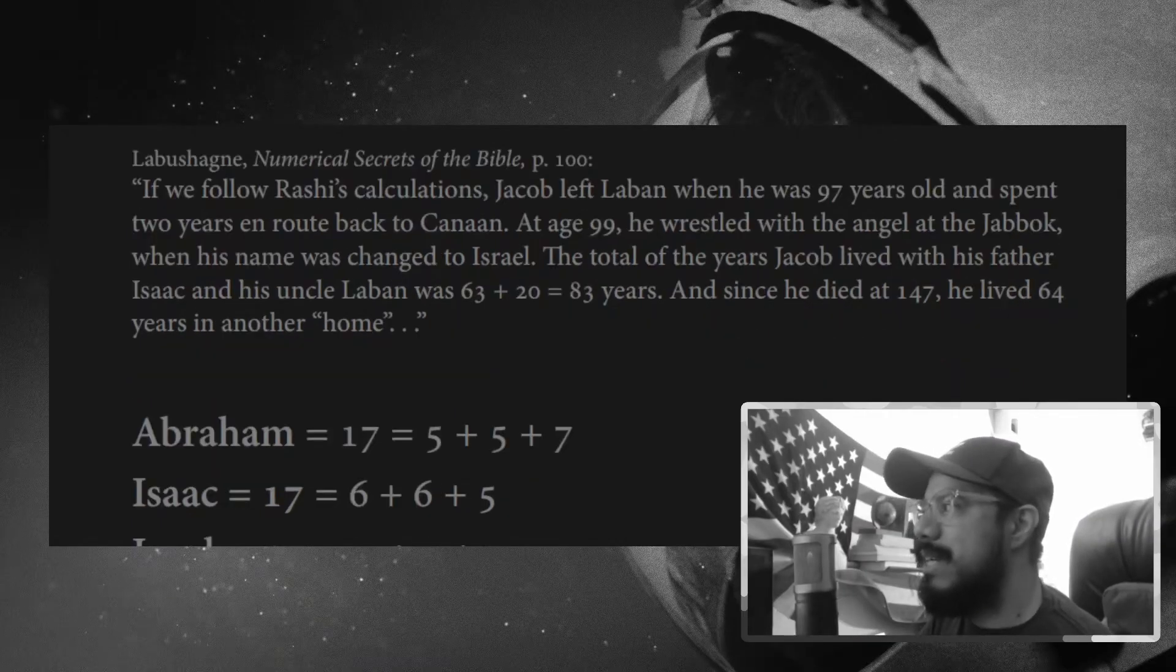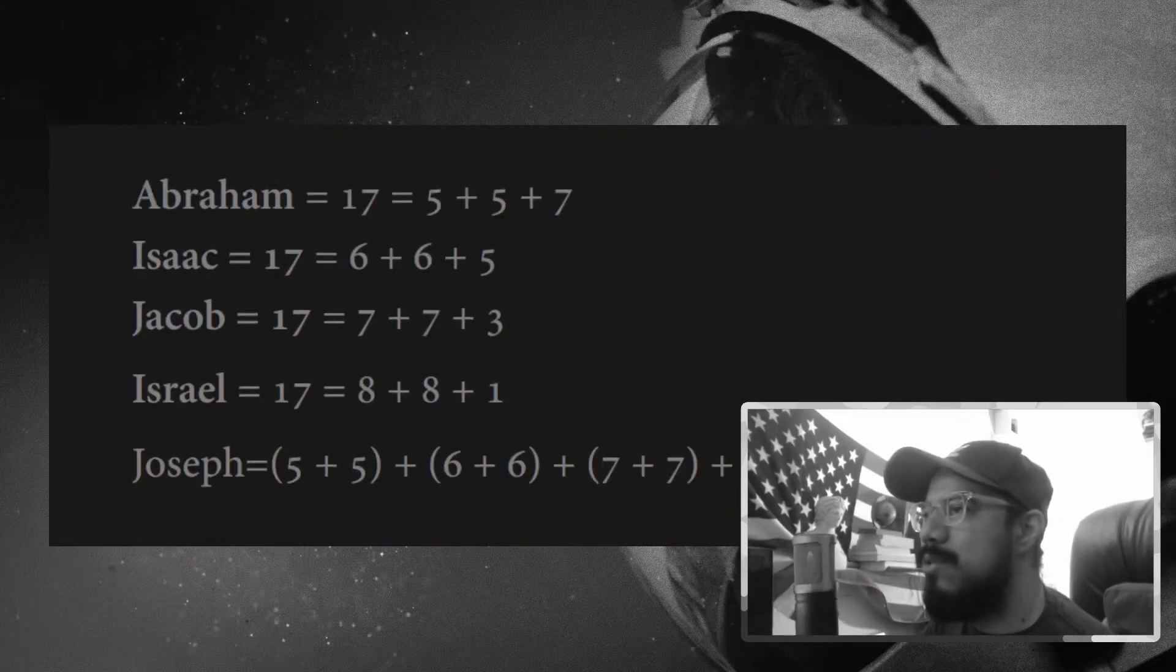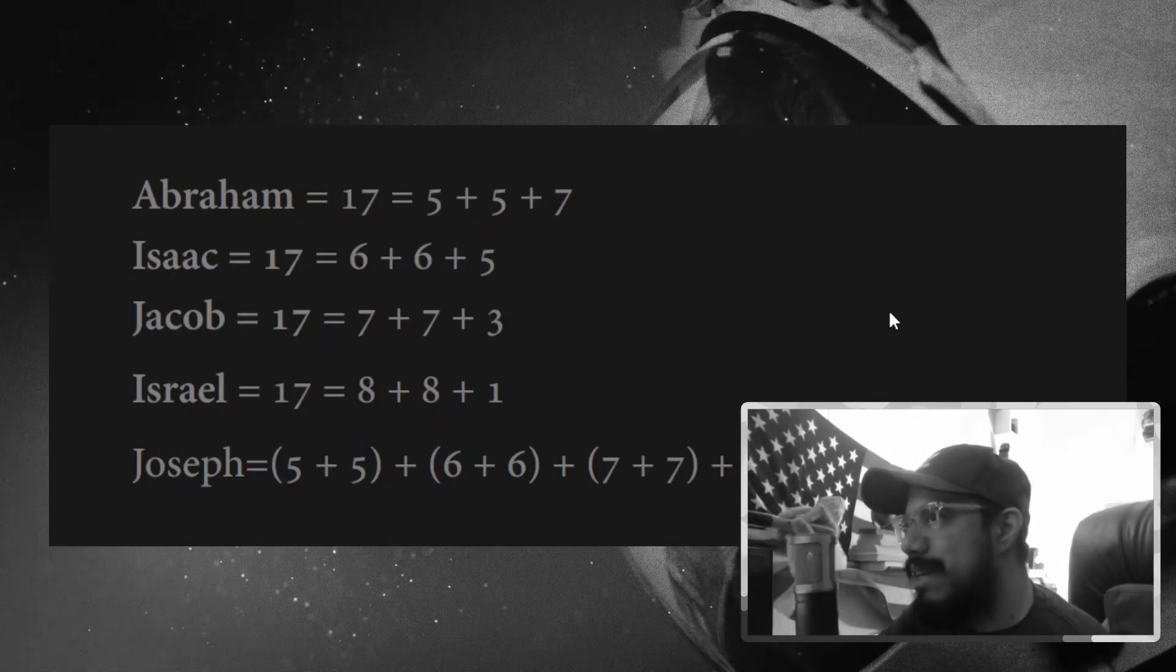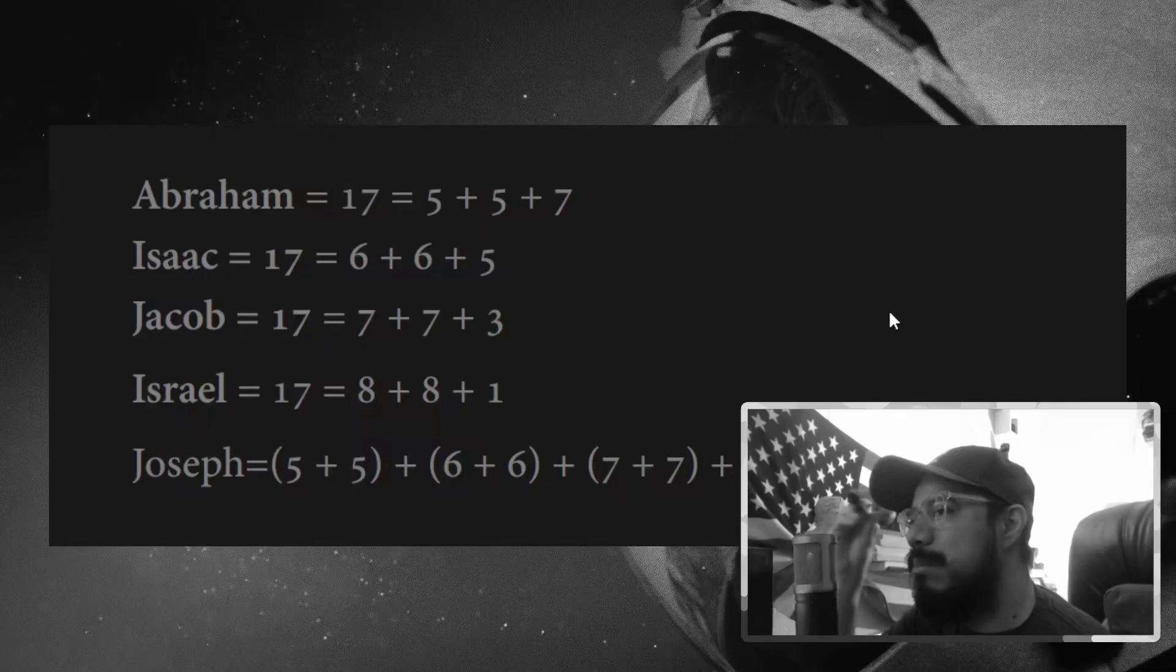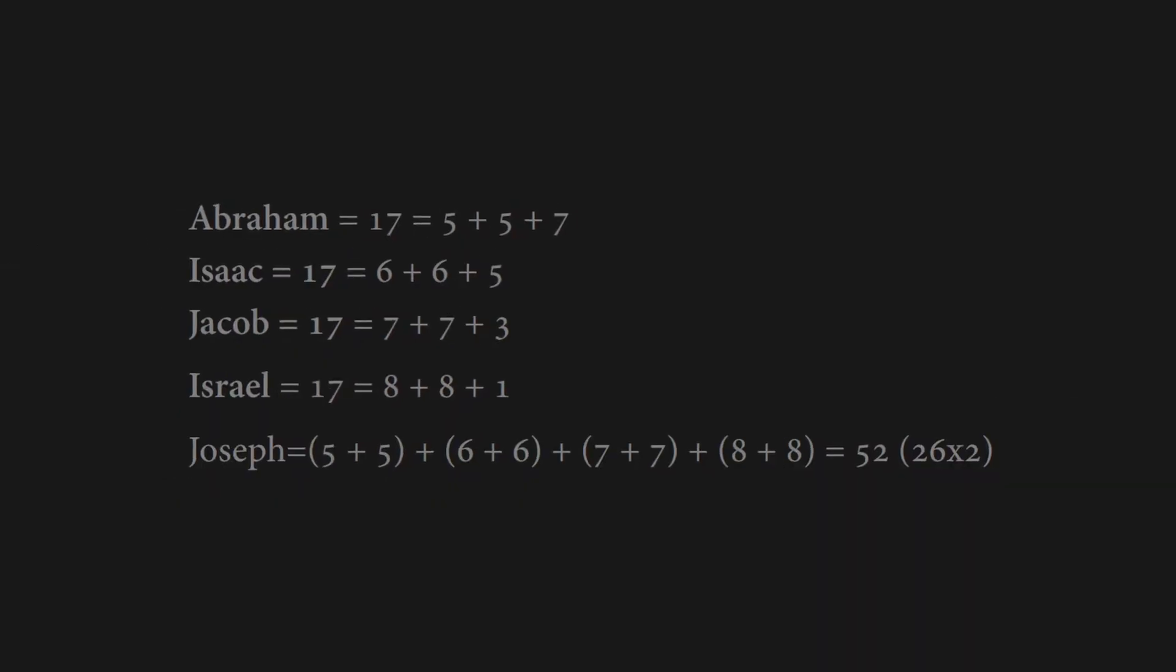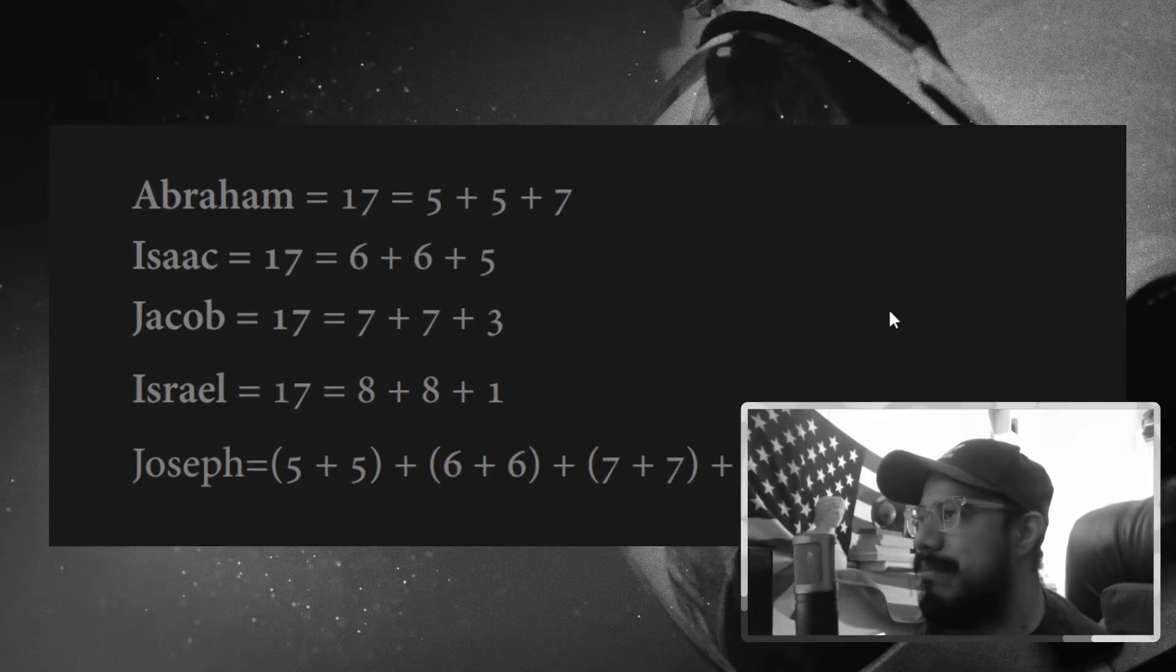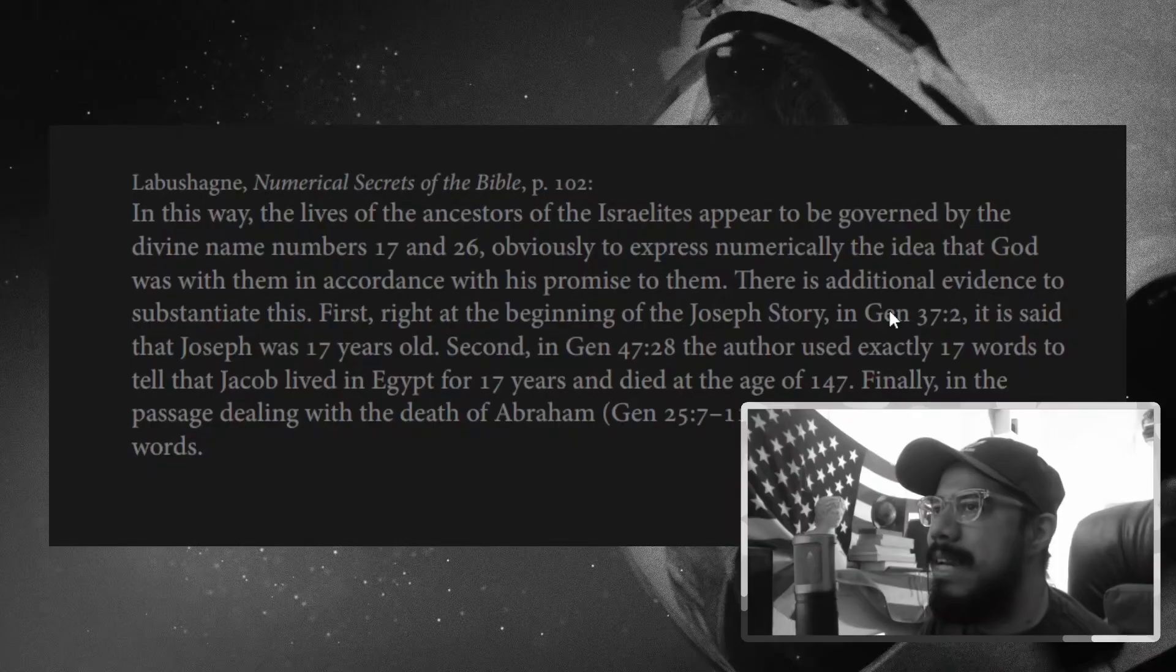But either way, with either of these observations, if the 64 is indeed part of that equation and it's associated with Israel, we then plug that back in. Because this is the last of these that would work to get back to 17. But if we plug these numbers in, we have Israel now here, 8 plus 8 plus 1. And if we bring Joseph back in, into this, where we have Abraham's 5 plus 5, Isaac, 6 plus 6, Jacob, 7 plus 7, and then Israel, 8 plus 8, we get 52, which is 26 times 2. It's the divine name Yahweh twice. That'd be a heck of a coincidence if it is.